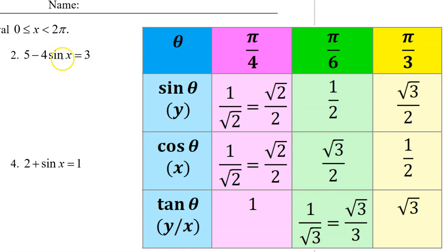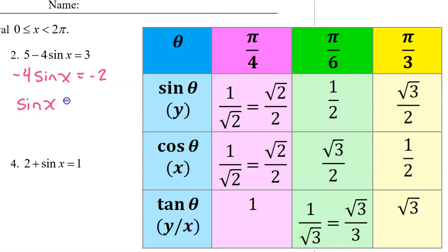For number 2, to get sine x by itself, we begin by subtracting 5 from both sides. So we have negative 4 sine x is equal to negative 2. Dividing both sides by negative 4 leaves sine x is equal to positive 1/2. We can find the reference angle by asking ourselves: the sine of what angle is 1/2? We have memorized that the sine of π/6 is 1/2, so π/6 is the reference angle.